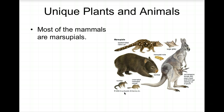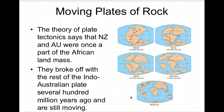Australia and New Zealand have many unique plants and animals, including kangaroos. Most of the mammals are marsupials — animals that keep their young in a pouch. According to plate tectonic theory, Australia and New Zealand were once part of the African landmass. They eventually broke off and drifted to their current positions.